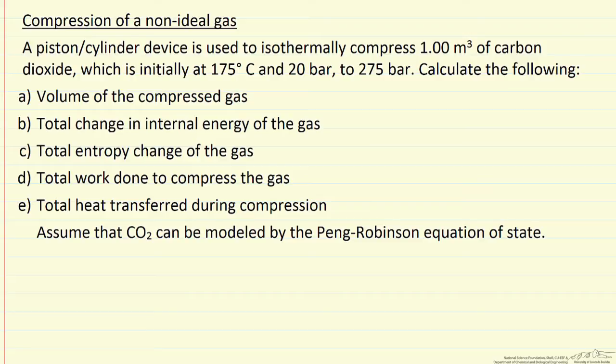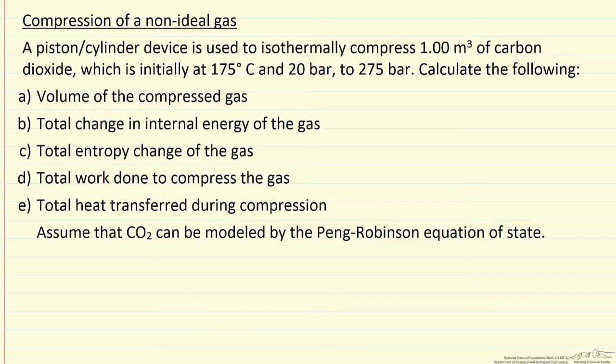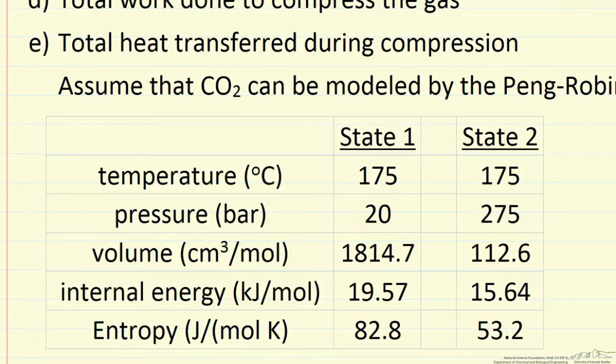We're going to model CO2 by the Peng-Robinson equation of state and use a spreadsheet described in a separate screencast to determine the values. What I want to show you now is the values that I've read off the spreadsheet. The spreadsheet used the Peng-Robinson equation to get the volume, internal energy, and entropy.